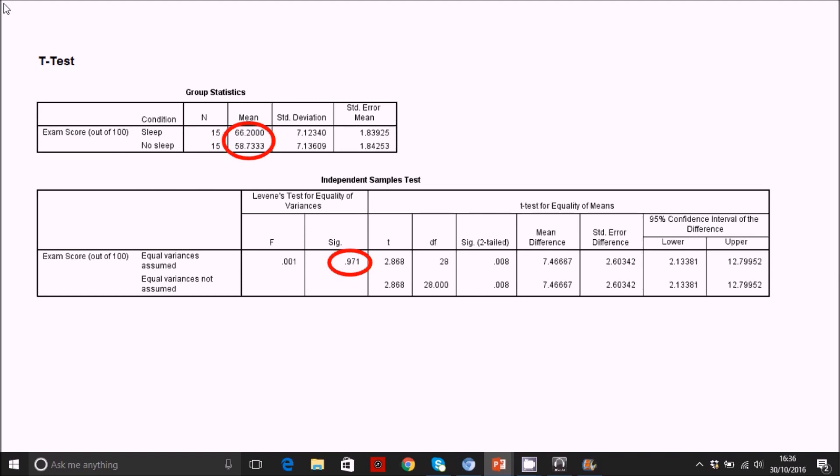At the moment we've got equal variances assumed, so we can just use this line here to report the test statistics. If you did have a significant Levene's test, you can still run the t-test, but you just need to report the data from this row here, which makes adjustments to the test statistics based on the fact that the variances are unequal. What it actually does is it alters the degrees of freedom.